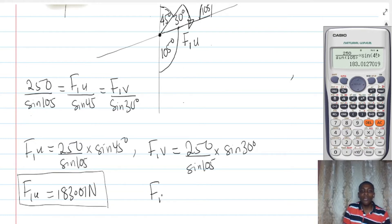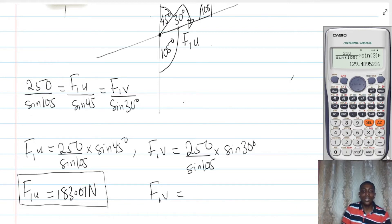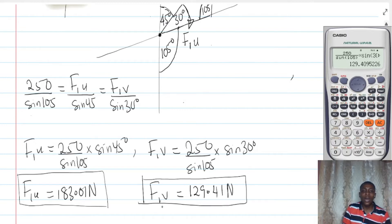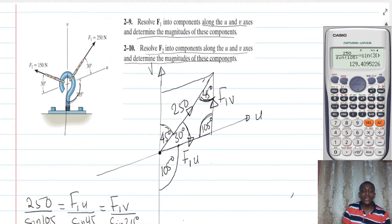If I want the component along v, the same approach applies but this time I multiply by sine 30, giving 129.41 Newtons. So I have been able to resolve the F1 force along u and v. Now I'm going to use the same approach for F2.